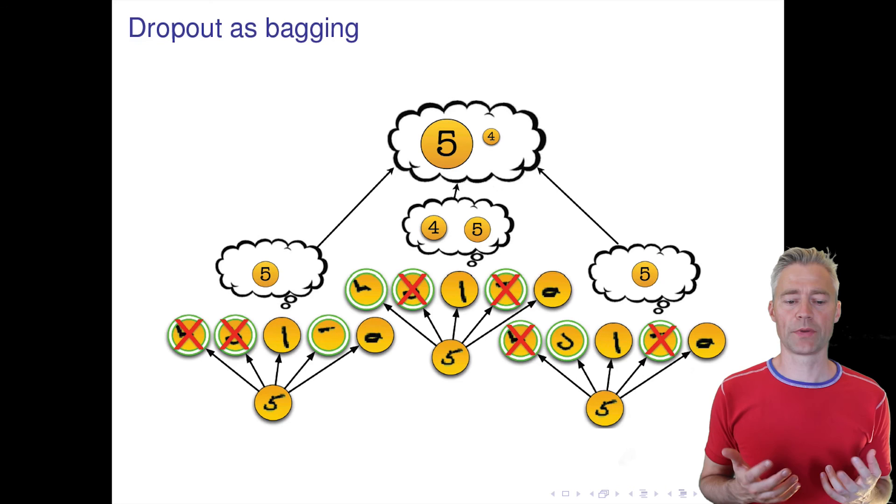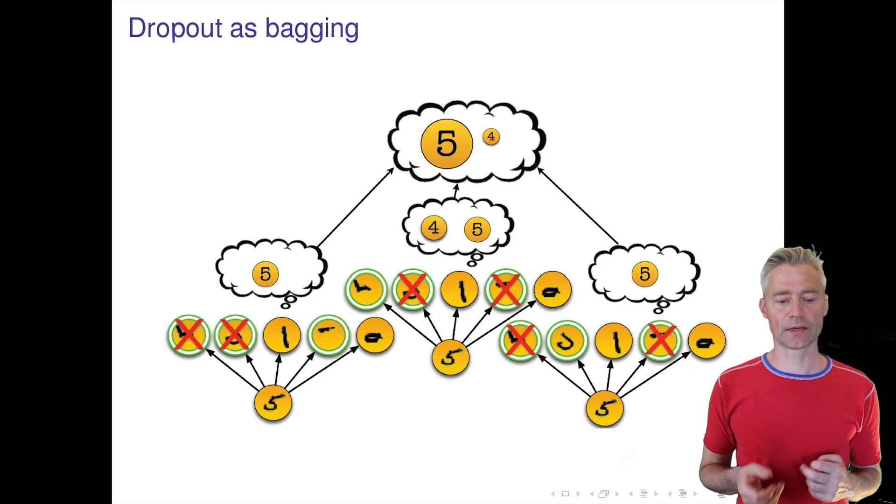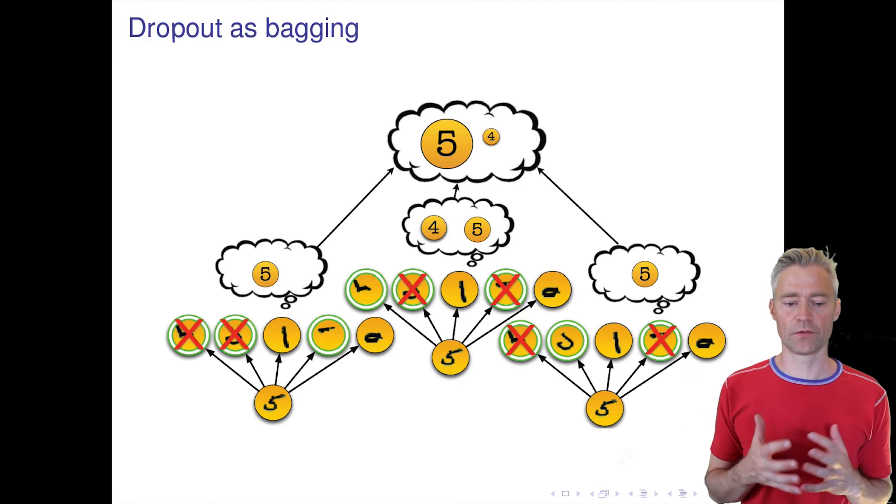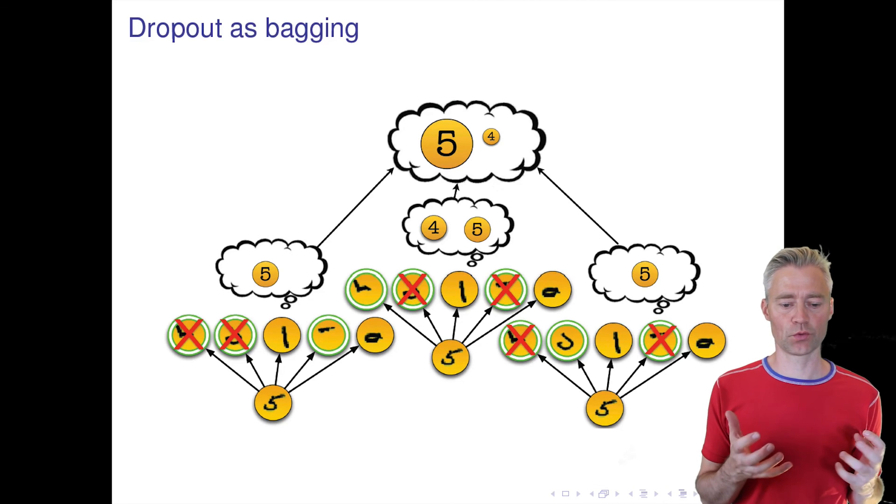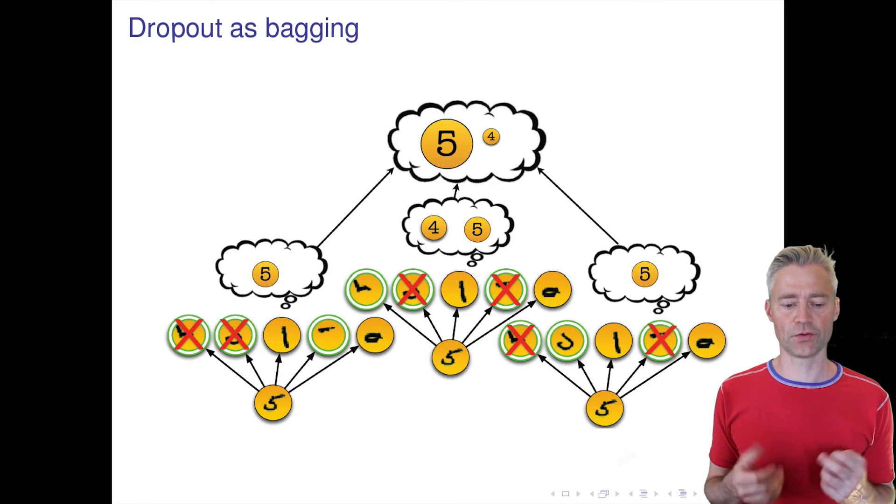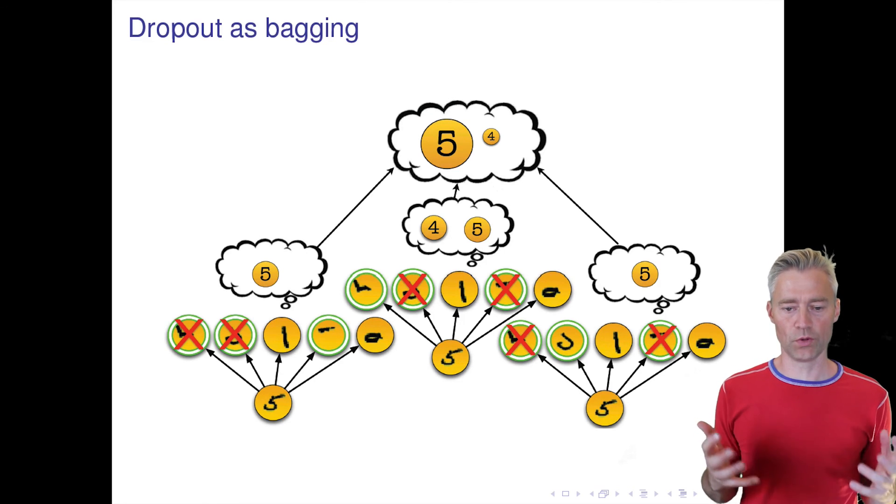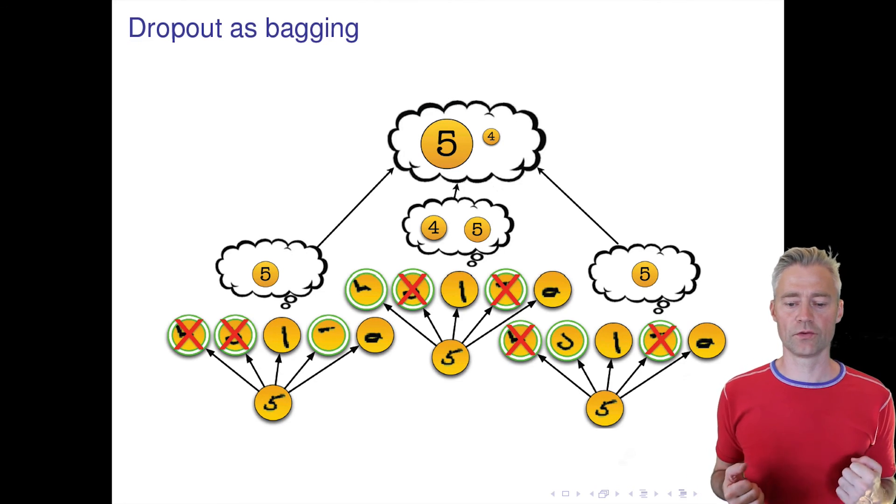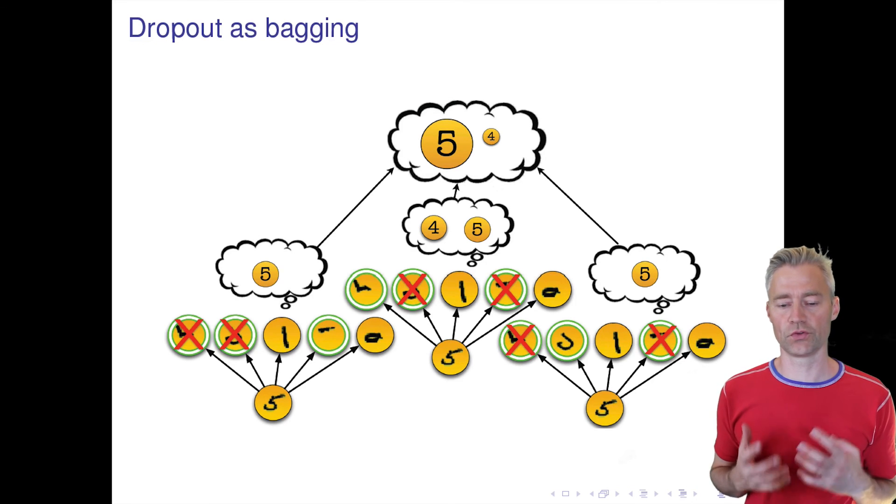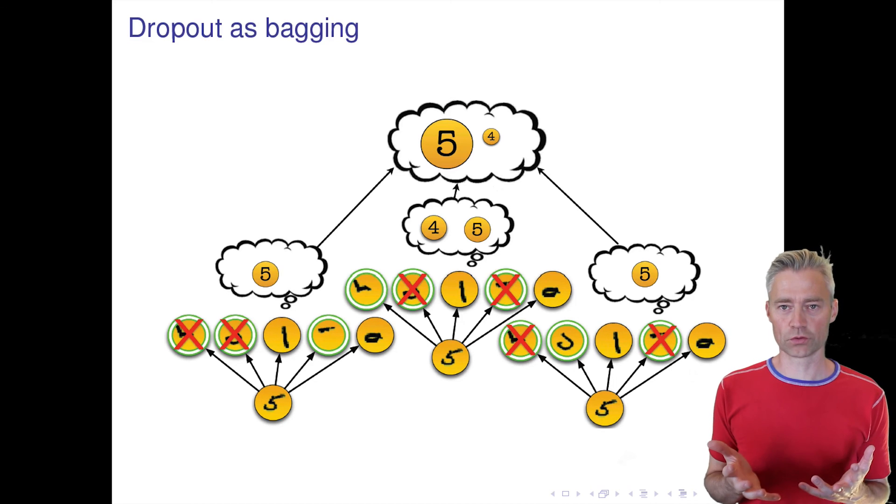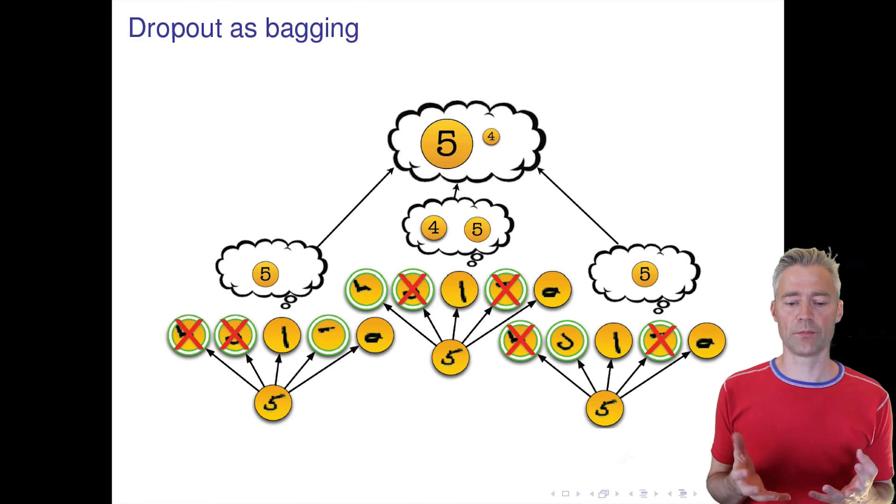We can also think about dropout as a kind of bagging. We have this ensemble of networks and a network where we have dropped out some features will then make some prediction. When we in the end combine all these dropped out networks, then we get a network which is more precise than each of the individual networks.